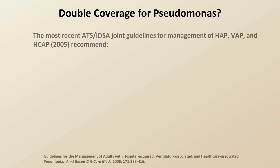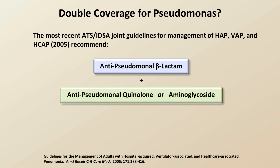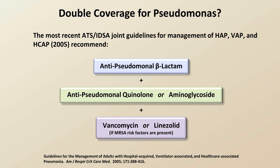In addition to the evidence, the most recent joint guidelines from the American Thoracic Society and Infectious Disease Society of America recommended the following regimen for management of hospital-acquired, ventilator-associated, and healthcare-associated pneumonias: an anti-pseudomonal beta-lactam plus either an anti-pseudomonal quinolone or an aminoglycoside, plus either vancomycin or linezolid if MRSA risk factors are present. It's also important to note that the level of evidence behind this recommended regimen was designated as Level 3, defined as evidence based on case studies, expert opinions, and antibiotic susceptibility data without clinical observations — in other words, poor quality evidence.